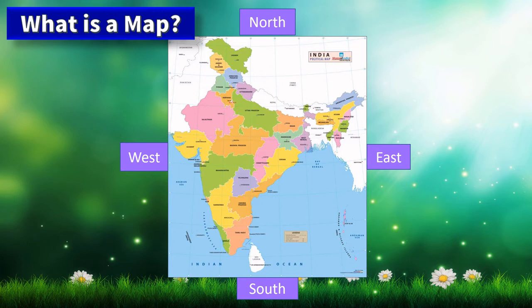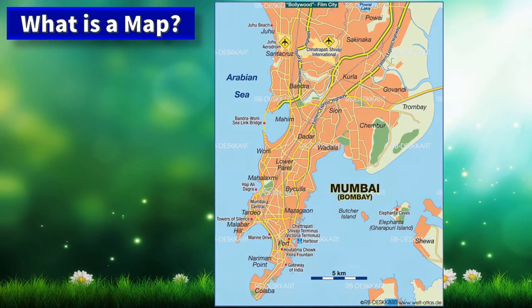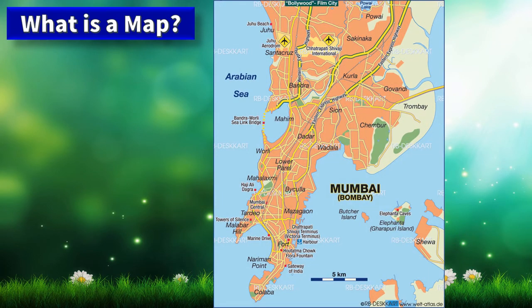Similarly, like our India map, we can have a map for our state, districts, and cities. Let us look at the Mumbai city map. It shows us various places in Mumbai city — the airport position, various highways, and interconnected places. The book of maps is called an Atlas.